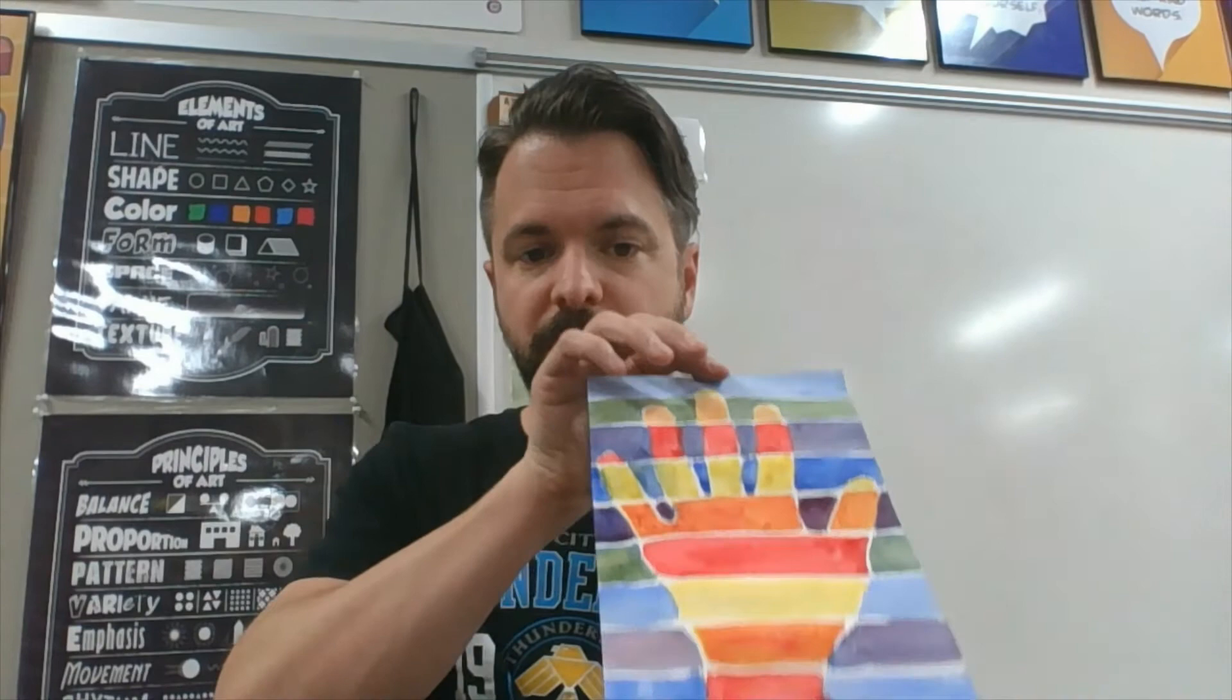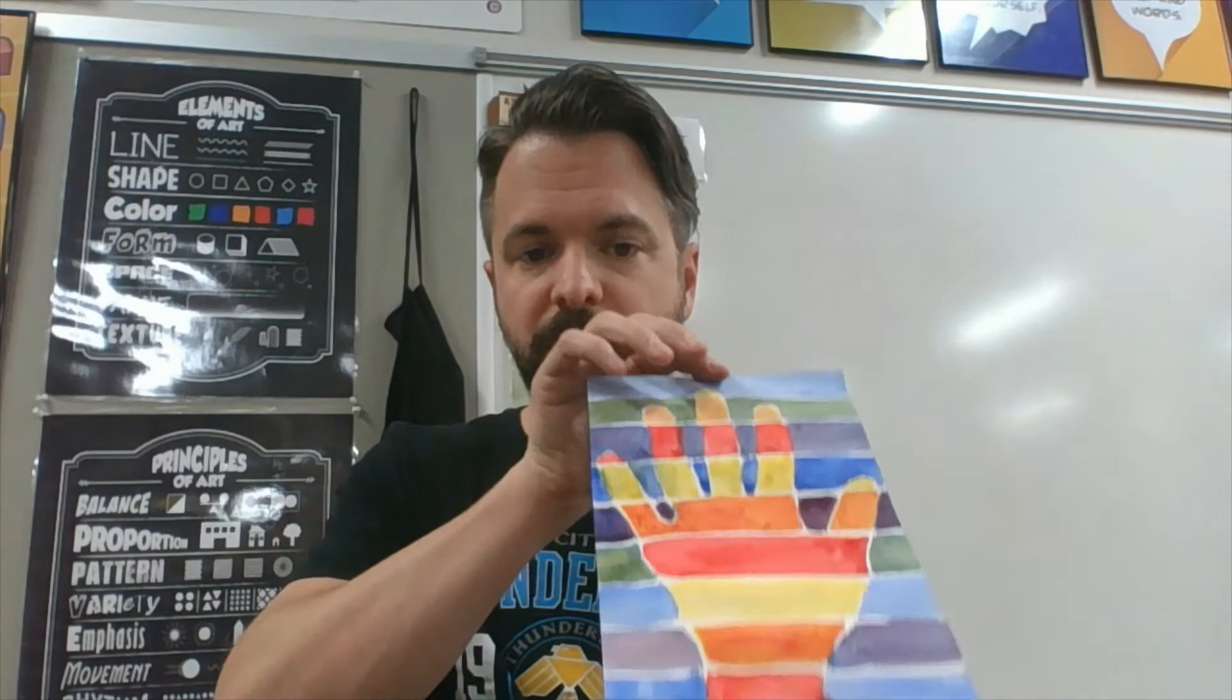I'm going to explain one thing those white areas that I left that's so the colors don't blend together unintentionally. If two wet colors touch each other like right down here they will blend together. Which is not a bad thing but I think the white kind of looks cool and I like to control which colors look exactly like what.